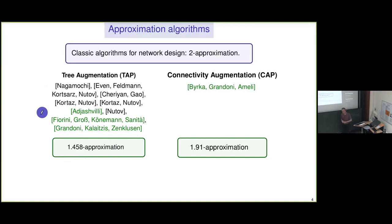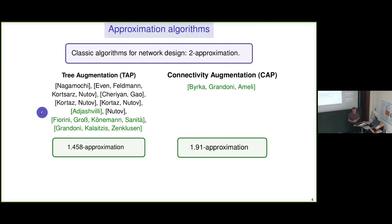Those problems are APX-hard — even unweighted TAP is APX-hard. The question from the floor was whether there is a lower bound and whether it's more like 1.01 or 1.1. The answer is yes, there is a lower bound, and it's more like 1.01 — pretty precisely 1.01 — which means it doesn't say that much. The lower bound is very weak compared to what we would believe it should be.